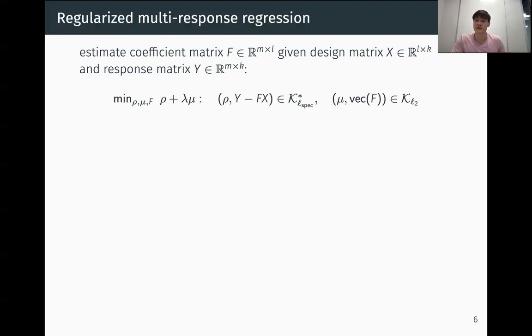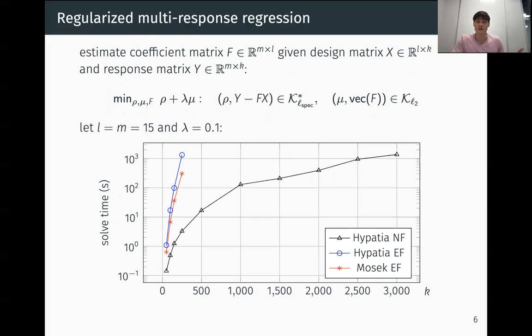An example of a problem where you might want to use the nuclear norm cone is regularized multi-response regression. Here we want to estimate a coefficients matrix F given some design matrix X and a response matrix Y. We minimize some weighted combination of the nuclear norm of the residuals and the L2 norm of the coefficient matrix. Letting L equals M equals 15 and fixing Lambda, we have a graph here for the solve time. We vary K. The black line is Hypatia solving the natural formulation, which is that formulation on the screen. The blue line is Hypatia solving the extended formulation, which has a PSD constraint, that high dimensional constraint. And then the red line is Mosek solving that same extended formulation. We can see that Hypatia on the natural formulation is able to scale to much larger sizes and solve in much faster times.